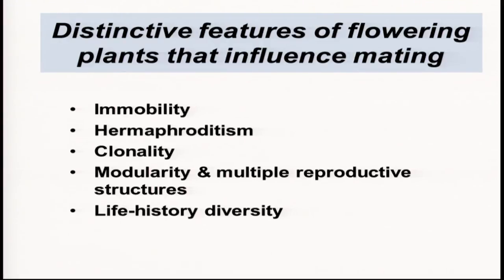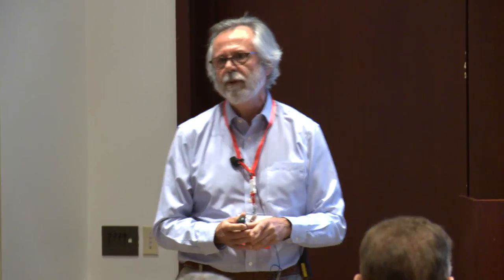It's worthwhile considering what are the distinctive — and I'm saying distinctive rather than unique, because many of these features also occur in other groups like corals — what are the distinctive features of plants that influence the way they mate? Clearly being immobile, at least during the sporophytic stage of the life cycle, is a constraint, and the whole field of pollination biology arises because people are interested in the vectors of gamete transmission or transfer between plants within populations.